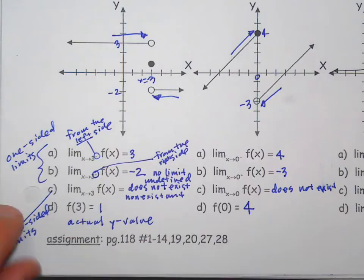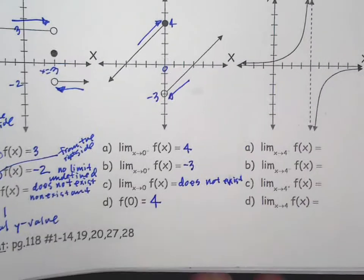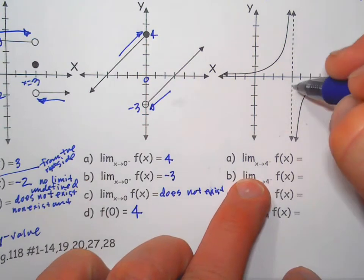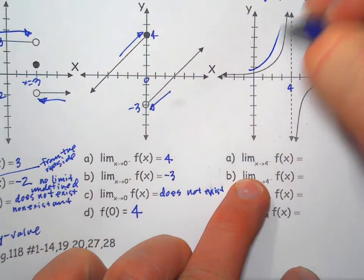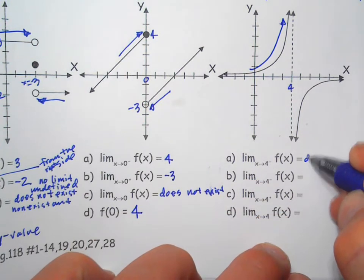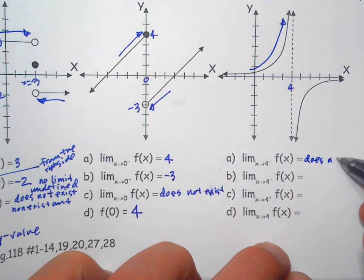The next one: as we approach 4 from the left side, the graph blows up. Now technically we'd say does not exist because it blows up.